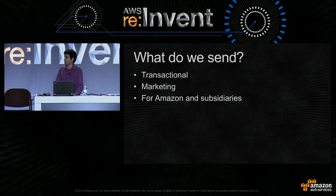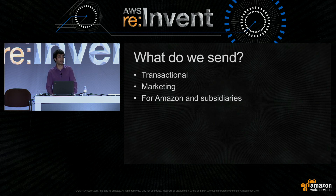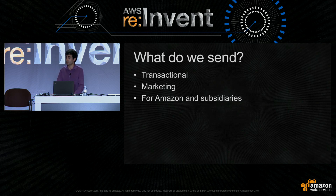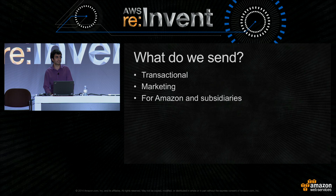So what kind of messages do we send at amazon.com? First off, we send about a million transactional messages per hour — things like shipment confirmations or purchase confirmations. We also send marketing messages, where we try to batch and send these emails as quickly as possible. I'll be mostly talking about the marketing side of things today. Finally, we don't only send for amazon.com, but also for a couple of our subsidiaries such as My Habit, Zappos, and Audible.